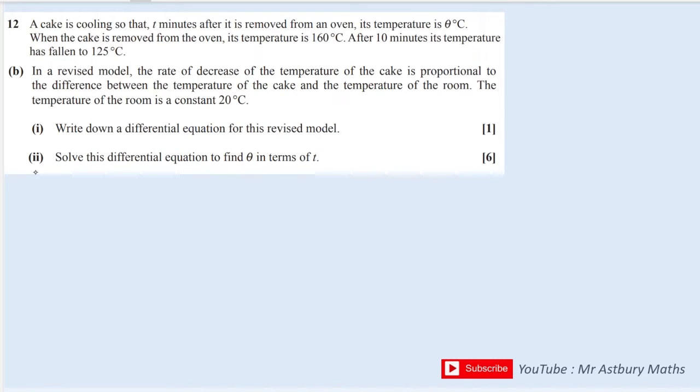So write down a differential equation. It says the rate of decrease of the temperature of the cake. Rate means d, the temperature is theta, and the rate is with respect to time, so it's how quickly it's cooling. And it is proportional to the difference between the temperature of the cake, which is theta, and the room temperature.